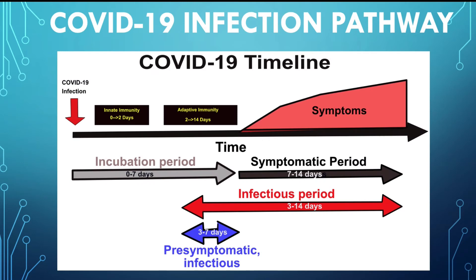This information reminds us of the COVID-19 infection pathway timeline. What is important to note is the incubation period. Depending on the individual, the incubation period on average is around seven days. During this time, there is a pre-symptomatic infectious period of anywhere between three to seven days where we don't display any symptoms associated with COVID-19 infection. However, we can be infectious, meaning we can unknowingly pass the virus to a colleague, family member, or any person we come in contact with. The existence of this period is one of the many reasons to follow the CDC guidelines.